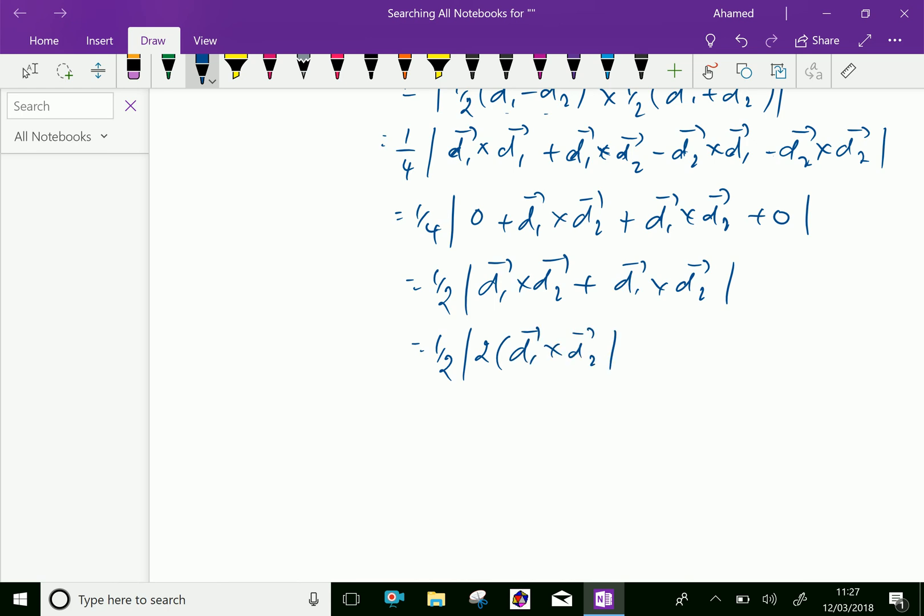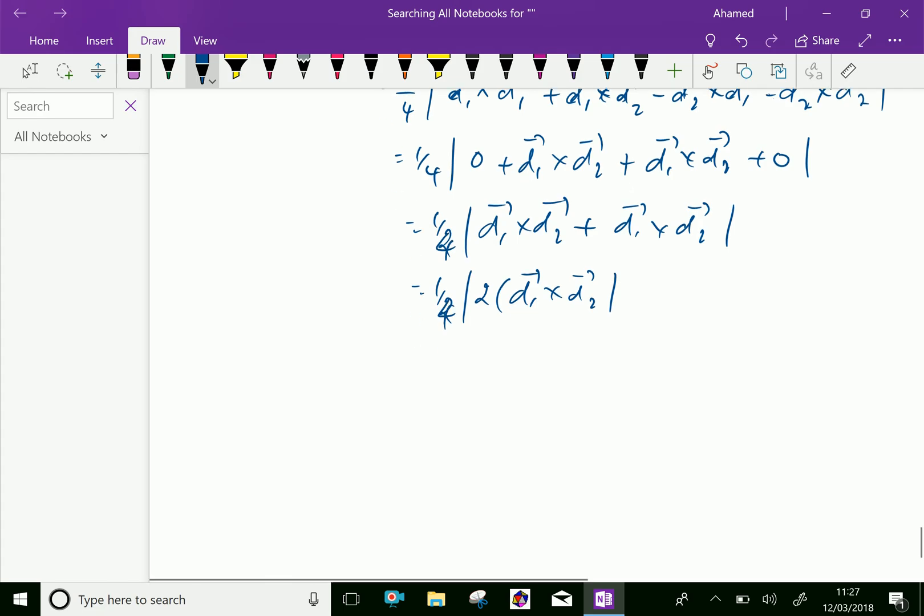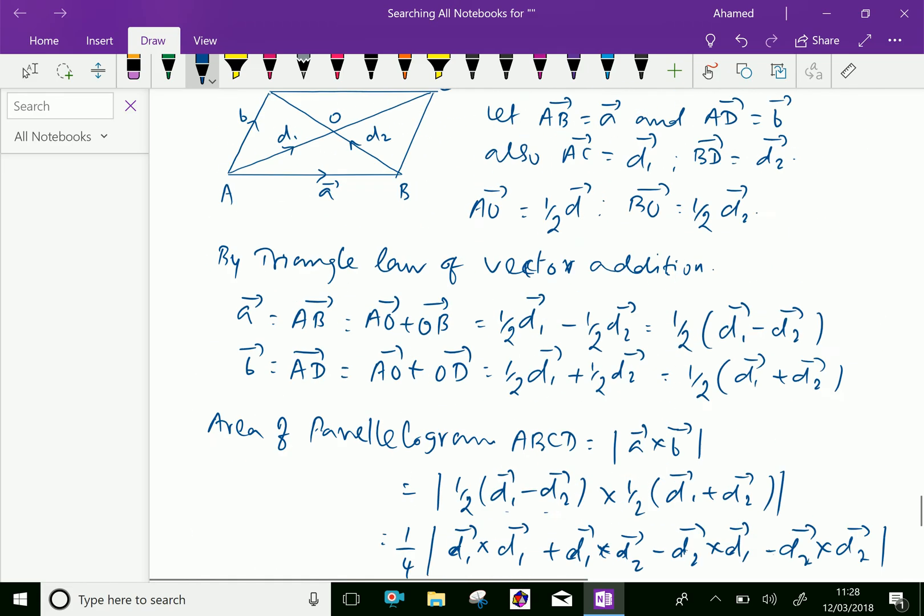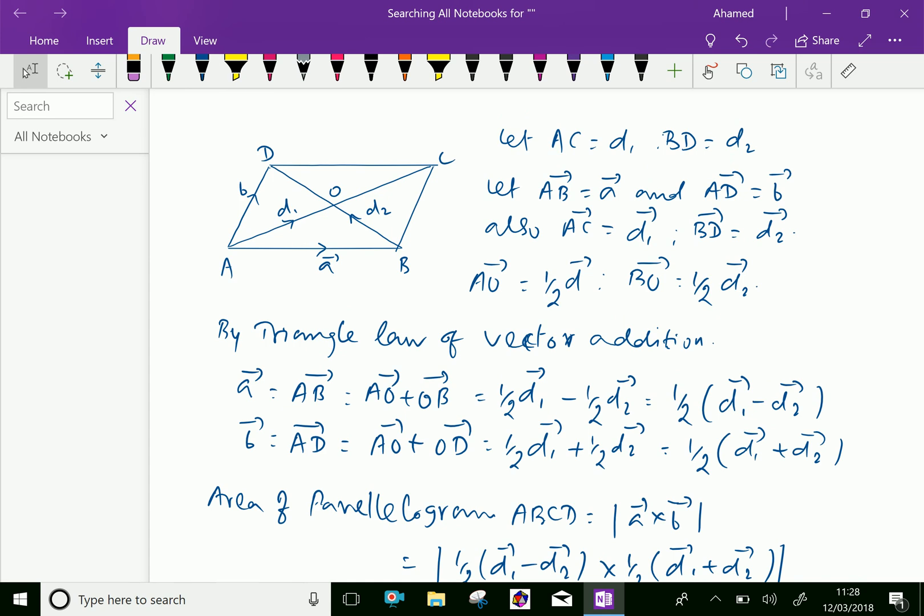So we have D1 vector cross D2 vector plus D1 vector cross D2 vector, equal half into 2 into D1 vector cross D2, then 1 by 4 into 2 is half, half into modulus of vector D1 cross vector D2.